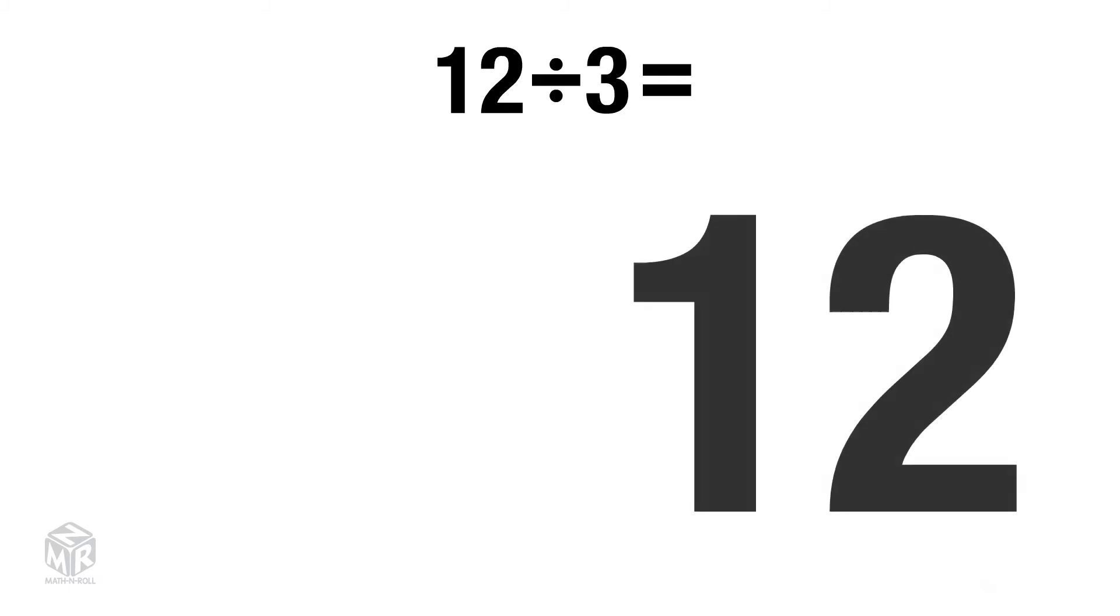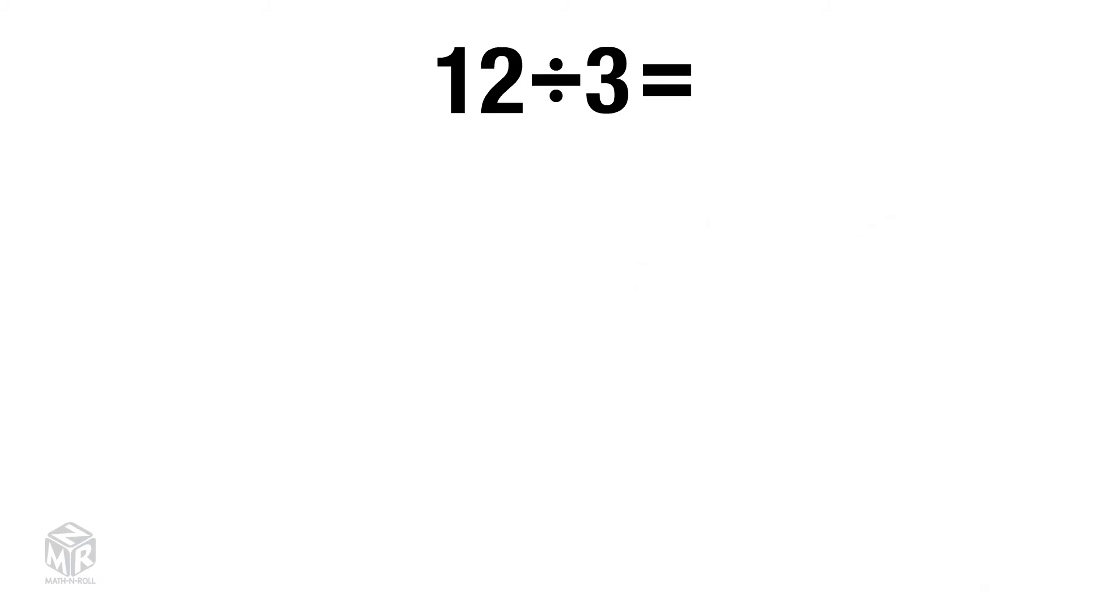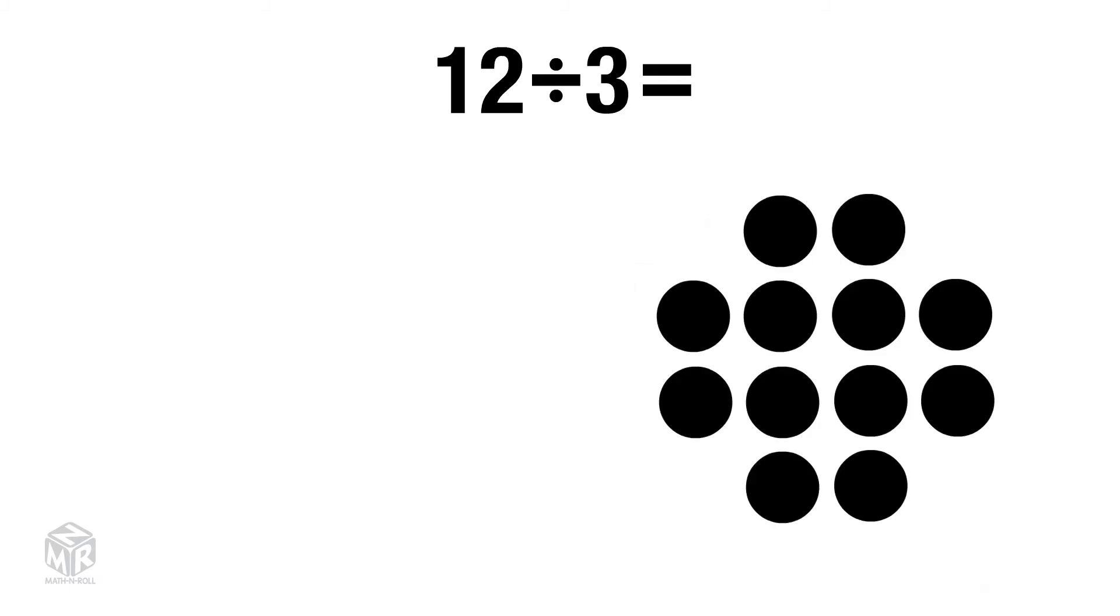Let's try an example: 12 divided by 3. Let's take a look at how to divide using subtraction. Start with the number you are dividing, 12. 12 is the dividend and the bigger number. Then subtract the number you are dividing by, 3. 3 is the divisor and the smaller number.